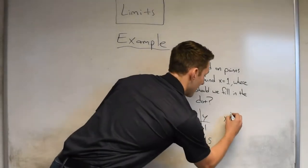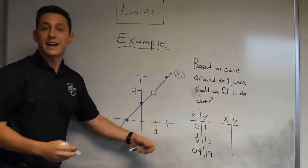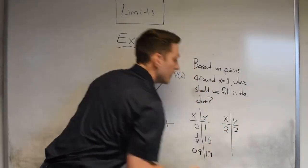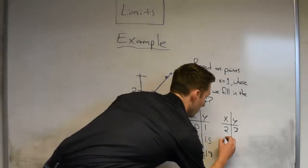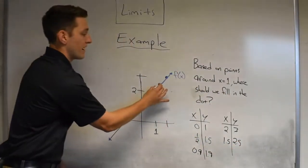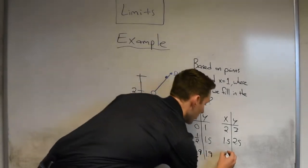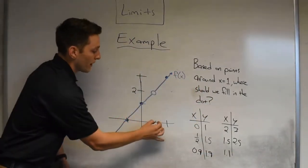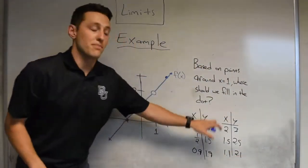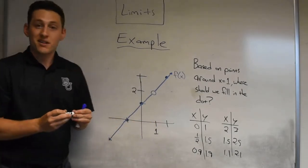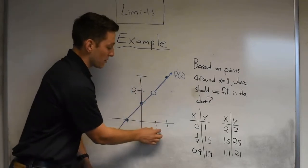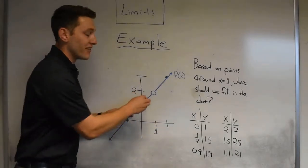Now if we did something similar from the other side, maybe starting at x equals 2, it looks like our y value would be 3. Maybe we get even closer to 1, like 1.5 — our y value would be 2.5. And now let's get even closer: 1.1 gives a value of 2.1. This might seem a little unnecessary because graphically we can just see that as we walk up, the y value that x equals 1 should probably have would be a y value of 2.